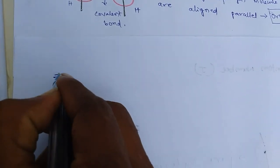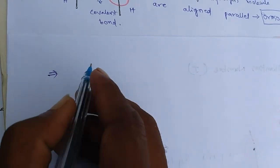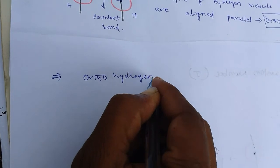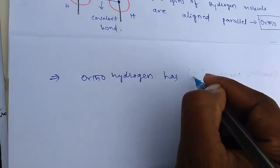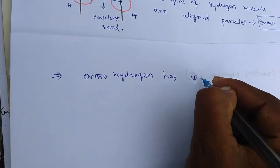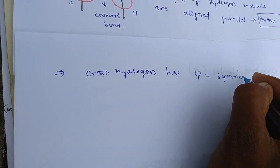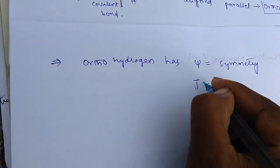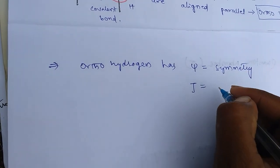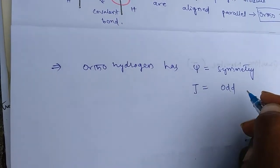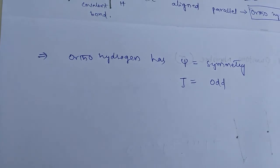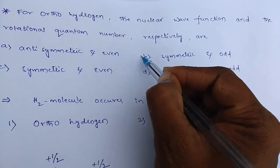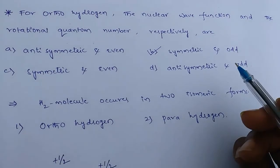From the explanation, we can conclude that ortho-hydrogen has nuclear wave function psi has symmetry and J rotational quantum number as odd or is odd or odd number. So from this we can give the option B as the correct answer for the given problem.